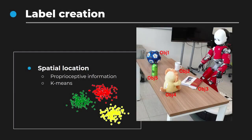So far, our framework allows the robot to selectively attend to and segment the objects in front of it, creating a dataset of objects and their corresponding bounding boxes. The last piece of information needed to train an object detection network is the label associated with each object. To extract the label, we use the proprioceptive information of the robot to create a memory of where the objects were originally located.